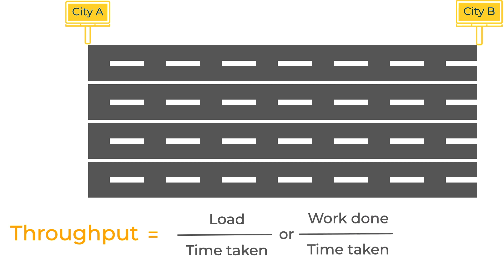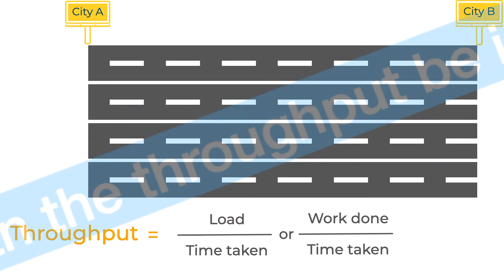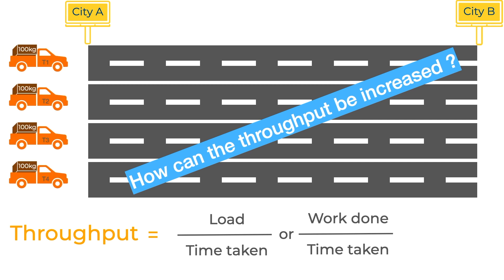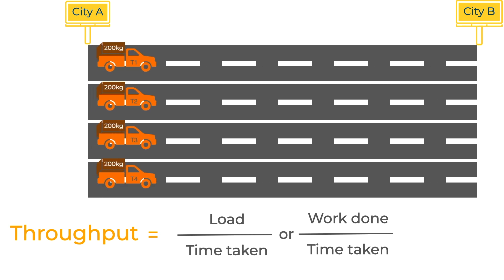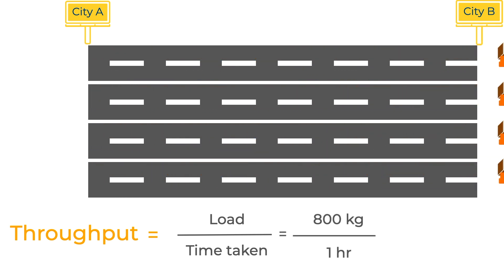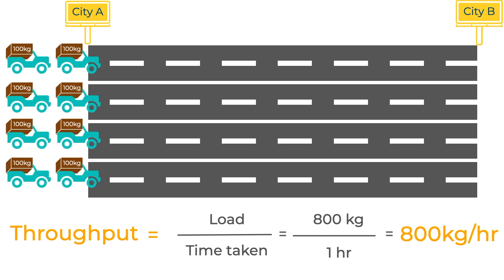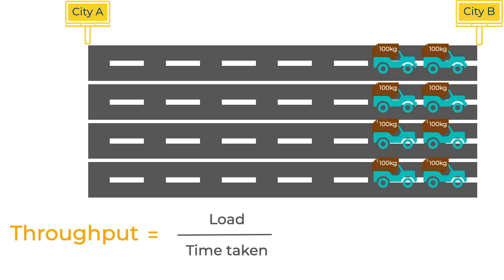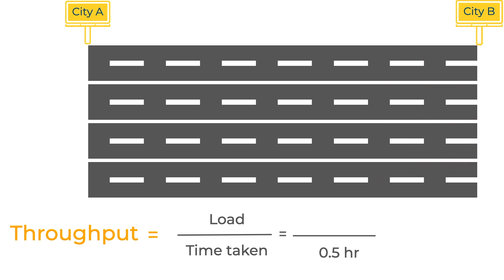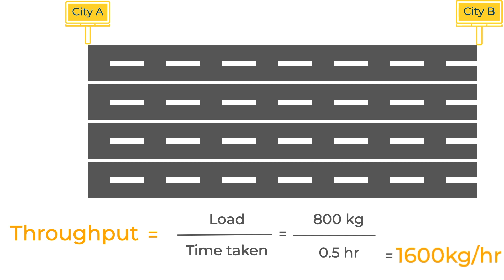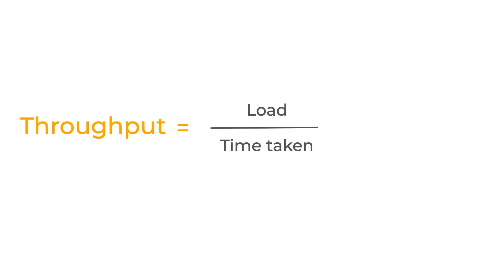Throughput is the amount of work done in a certain amount of time. To increase throughput, one way is to increase the capacity of trucks — say they carry 200 kg each. Four trucks carrying 200 kg each means 800 kg per hour — double the throughput. Alternatively, using eight smaller vehicles each carrying 100 kg but traveling from A to B in half an hour also doubles throughput to 800 kg per half-hour, or 1600 kg per hour.